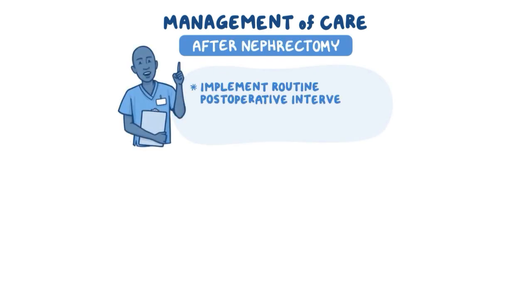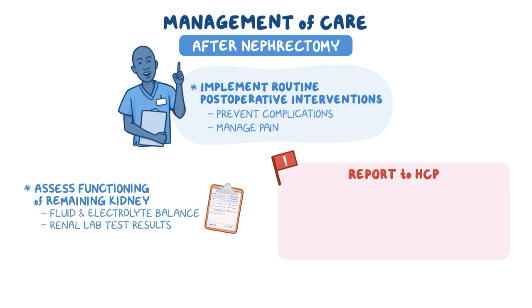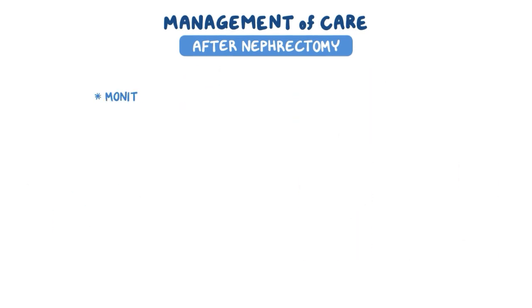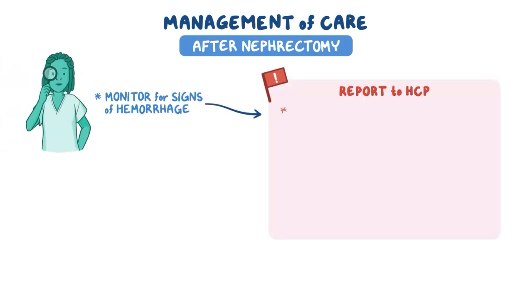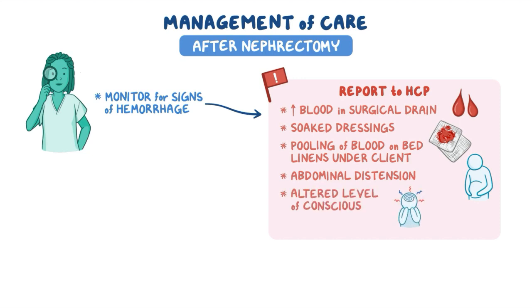If caring for a client after a nephrectomy, implement routine post-operative interventions to prevent complications and manage pain. Assess the functioning of their remaining kidney by monitoring fluid and electrolyte balance and renal laboratory test results. Report to the healthcare provider immediately for signs of renal insufficiency, including urine output less than 30 mL per hour, edema, increased serum creatinine and potassium, or increased urine sodium. Also monitor for signs of hemorrhage, including increased blood in their surgical drain, soaked dressings, pooling of blood on bed linens, abdominal distension, altered level of consciousness, and hypotension.